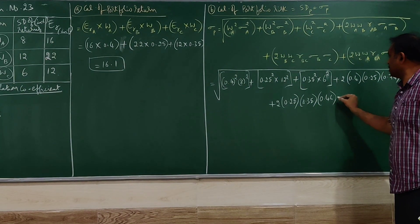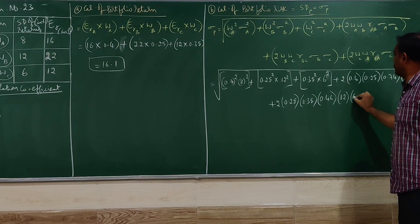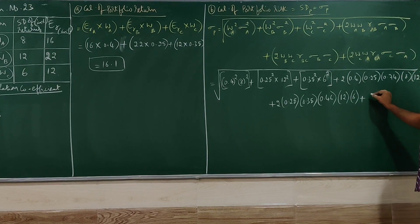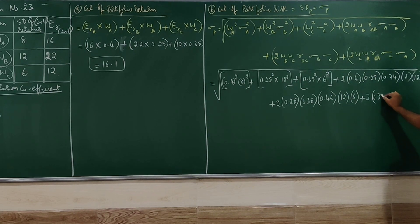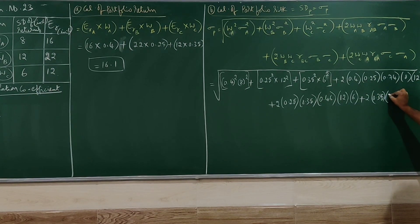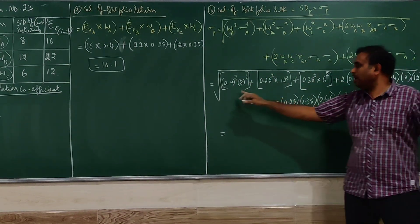2 into 0.25 into 0.35 into the correlation of B and C, 0.46 into 12 into 6. Again plus 2 into C and A combination: 0.35 into 0.4 into 0.82 into 12 into 6.